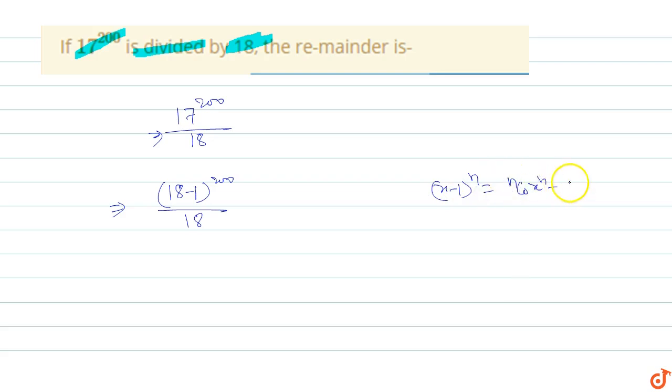x power n minus nC1 x power n minus 1 plus nC2 x power n minus 2 up to nCn times 1 power n. So for (18-1)^200, the expansion is...